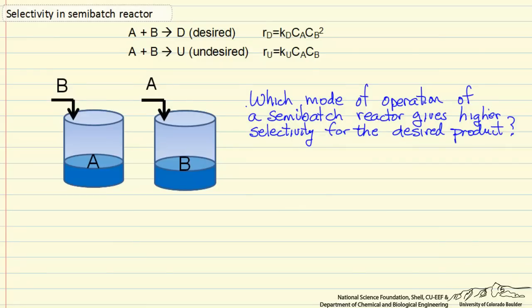In this video I want to look at using a semi-batch reactor where we have two parallel reactions with different reaction orders, and the objective is to determine which arrangement of the semi-batch reactor will give us the higher selectivity for the desired product.